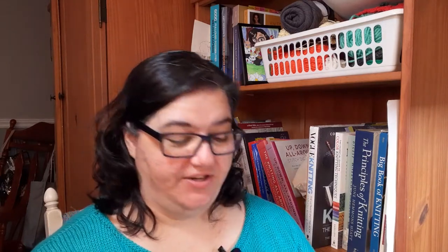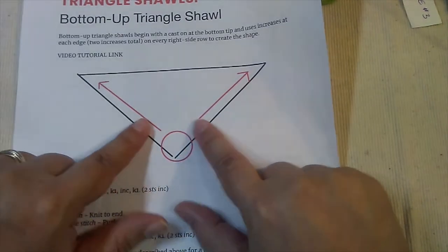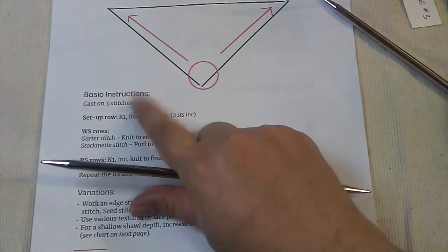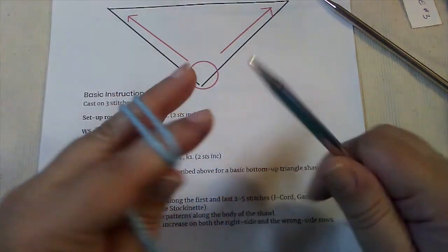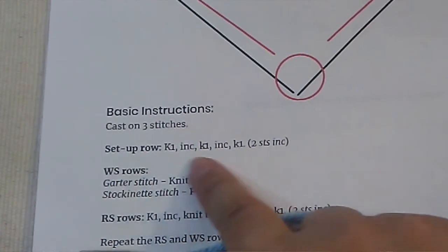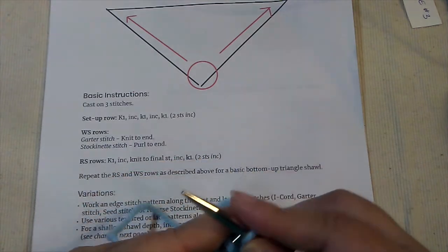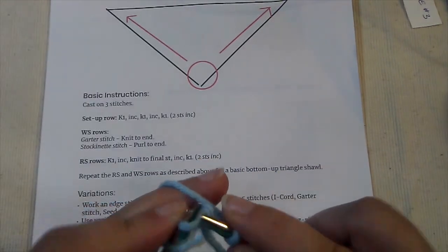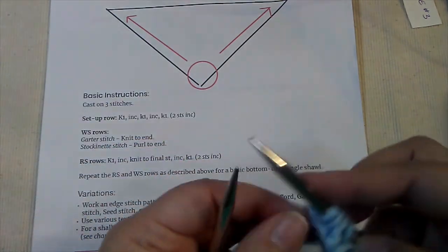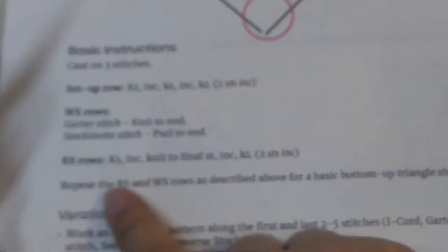Now let's look at the instructions for the basic pattern. You can see we've got a picture of it right here. You would start here and work your increases and bind off there. Our basic instructions for this shape: cast on three, then we have a setup row. Knit one, increase, knit one, increase, knit one. You can choose your increase method. I'm going to just use yarn overs for this. There's our setup row complete, so that would be our first right side row.